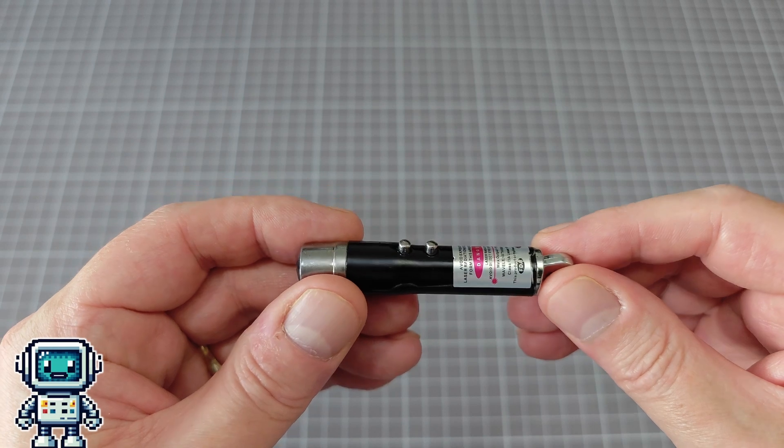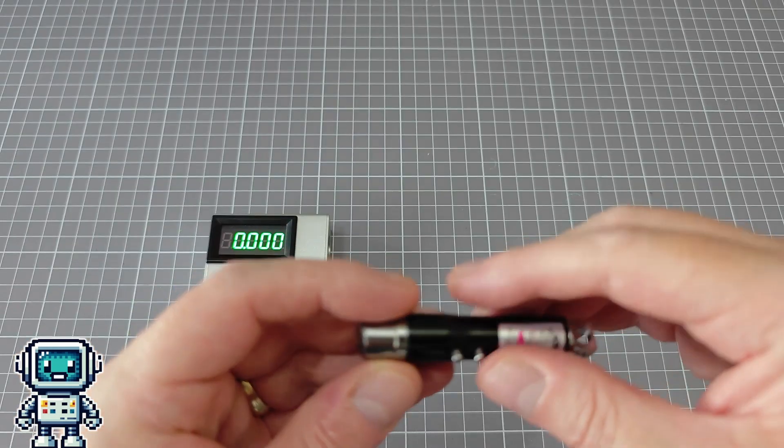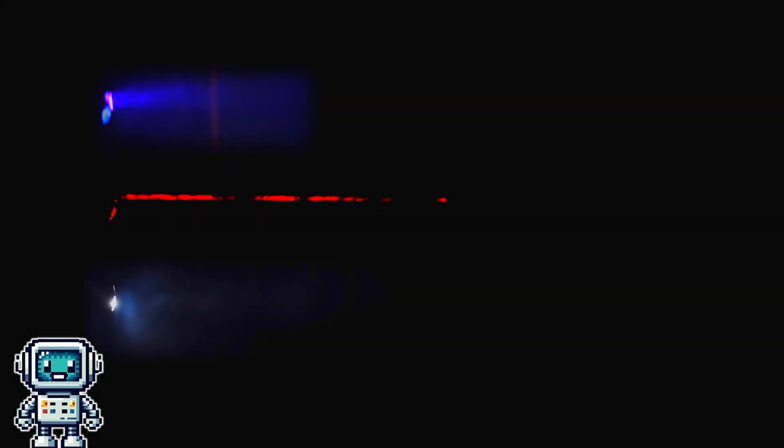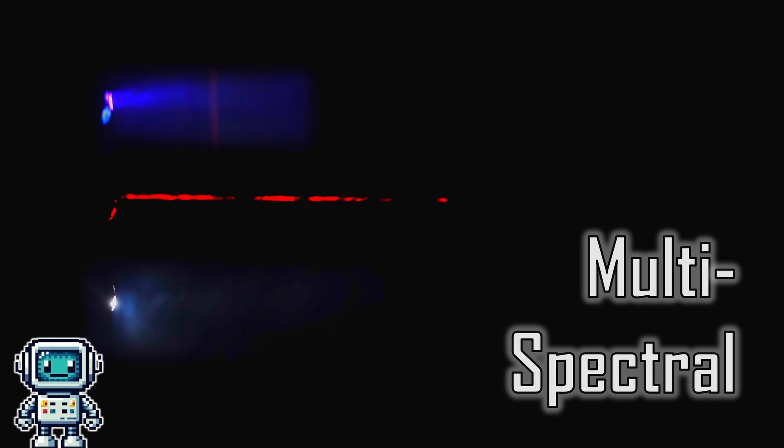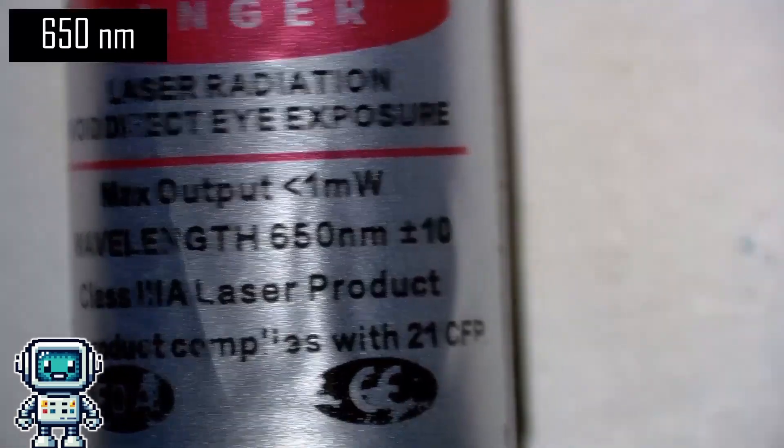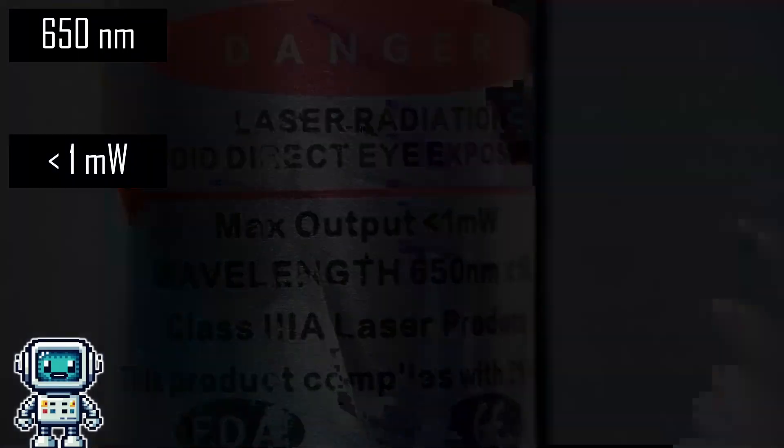This next laser is part of a novelty device that has a white LED, a UV LED, and a red laser integrated into a small package, which makes it multispectral. Anyway, it claims to have a wavelength of 650 nanometers, an output power under 1 milliwatt, and to have a Class IIIA rating.